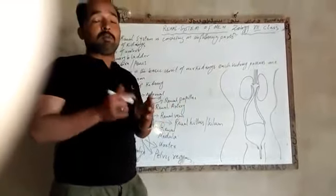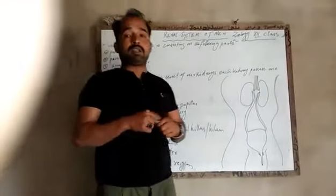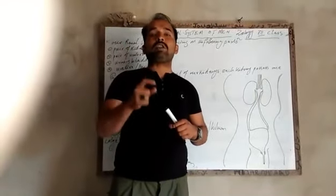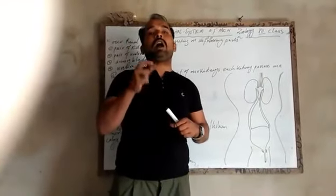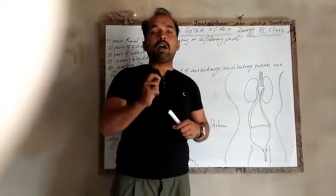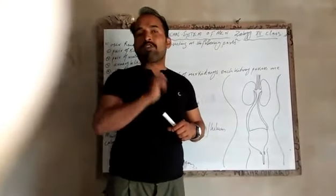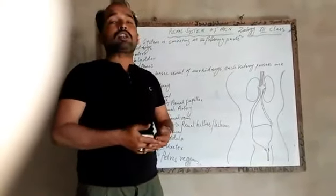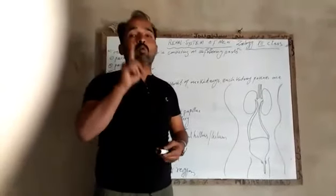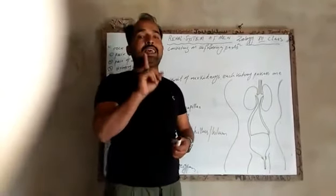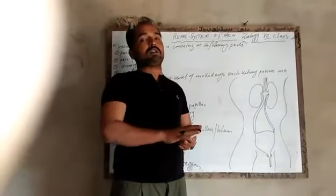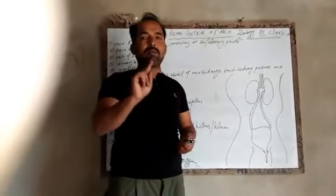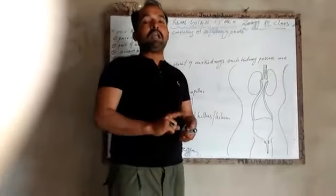The basic unit of the kidney is the nephron, and each kidney contains 1 million nephrons.